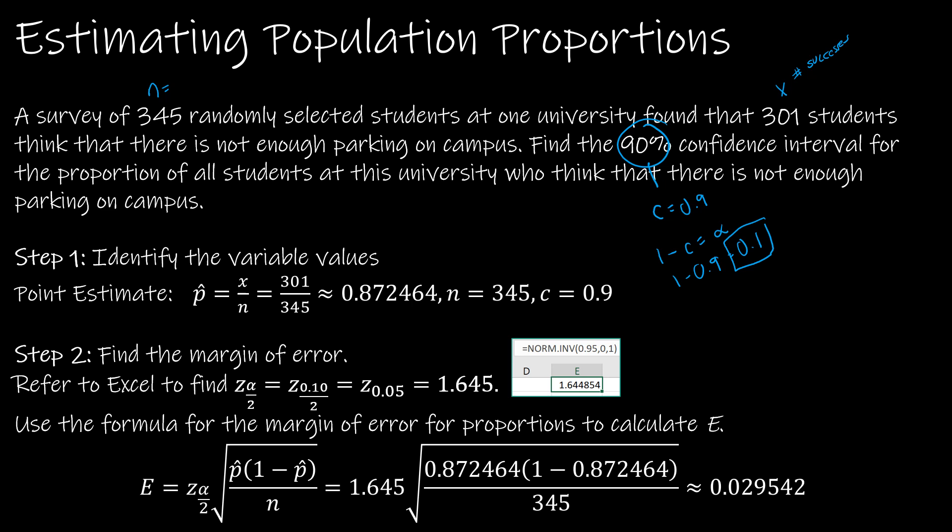Step one: identify the variable values. Guess what, we just did that. The only thing I didn't do is actually find P hat. Remember P hat is just x over n, so that's 301 divided by 345.